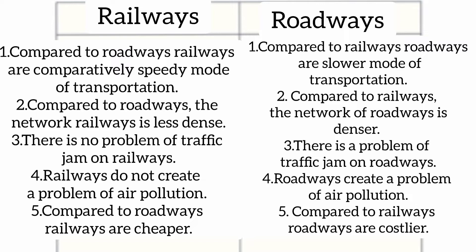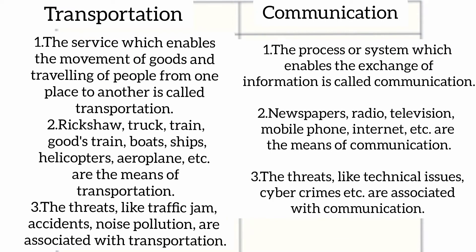Third point of roadways: there is a problem of traffic jams on roadways. Fourth point: railways do not create a problem of air pollution, whereas roadways create a problem of air pollution. Fifth point: railways are cheaper compared to roadways, whereas roadways are costlier.